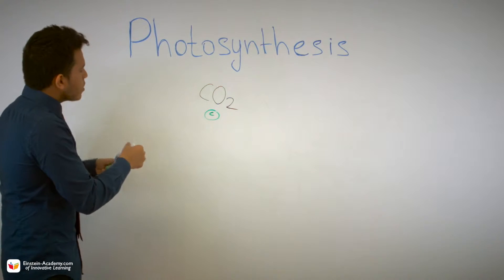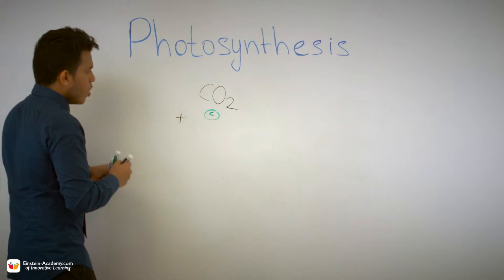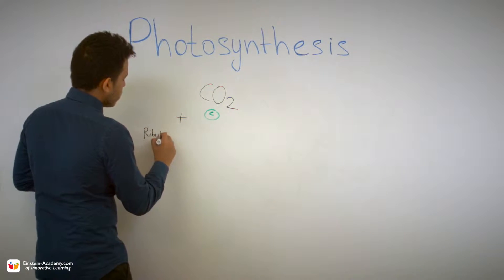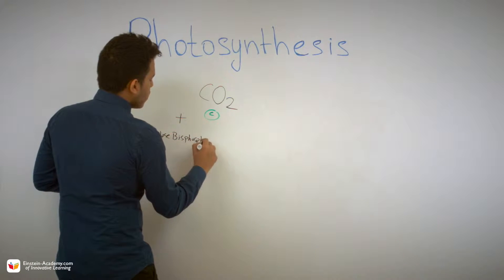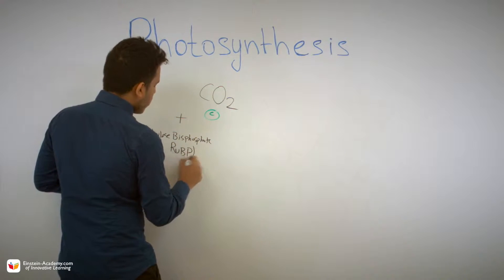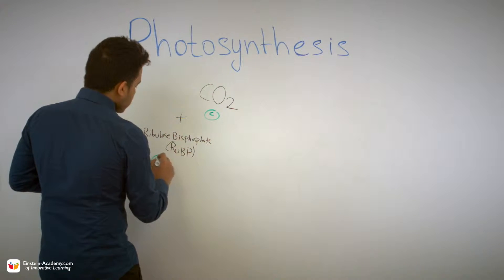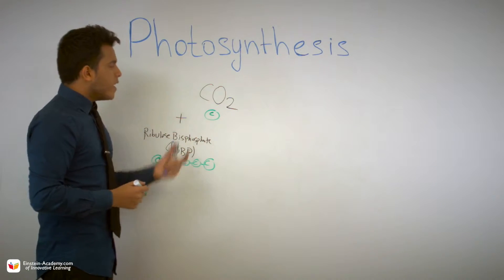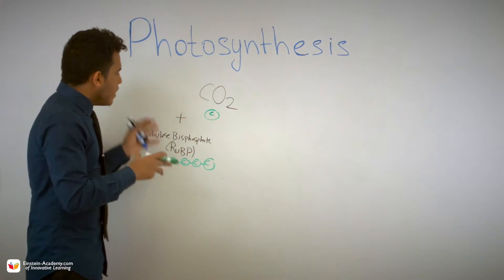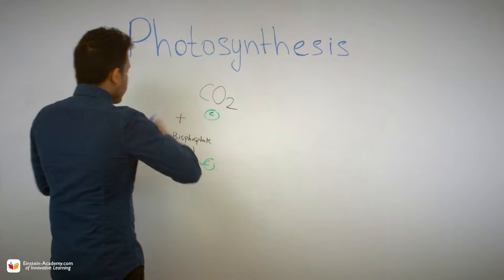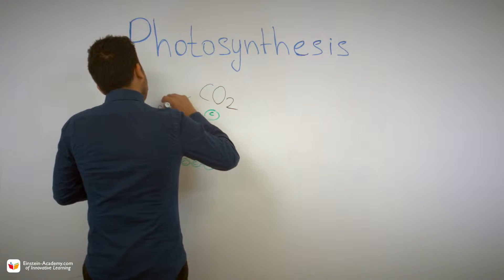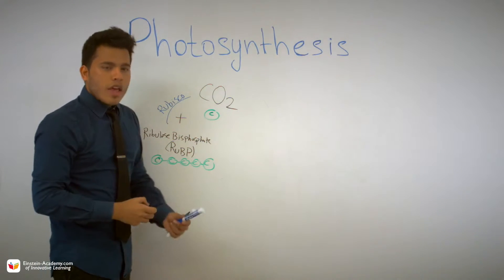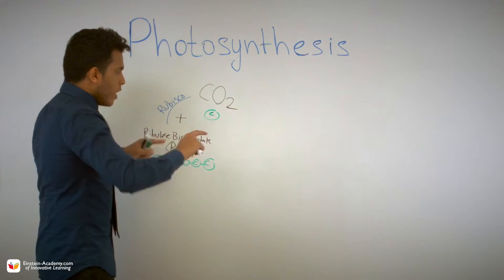One carbon from CO2 will be combined and joined with another molecule called ribulose bisphosphate — RUBP for short — which is a five-carbon structure. RUBP and carbon dioxide cannot just join together; it needs an enzyme. That enzyme is called Rubisco — very important. Rubisco will join the CO2 molecule and the RUBP molecule to generate a six-carbon molecule.